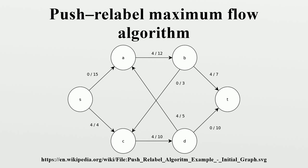Heuristics are crucial to improving the empirical performance of the algorithm. Two commonly used heuristics are the gap heuristic and the global relabeling heuristic. The gap heuristic detects gaps in the height function: if there is a height value H for which no vertex has that height, then any vertex with height less than H has been disconnected from T and can be immediately relabeled. The global relabeling heuristic periodically performs backward breadth-first search from T in GF to compute the exact heights of vertices. Both heuristics skip unhelpful relabel operations, which are a bottleneck of the algorithm.